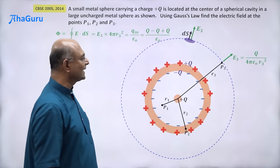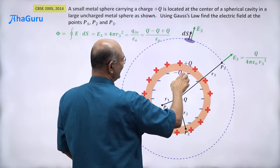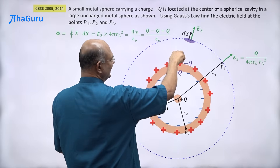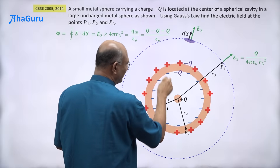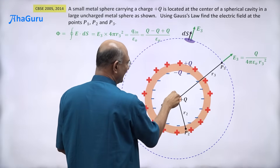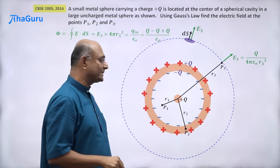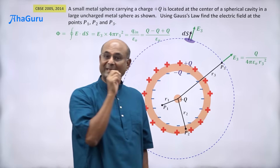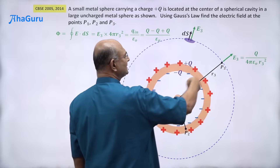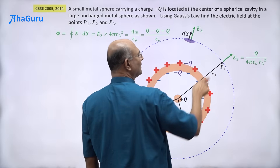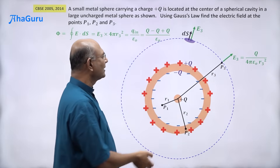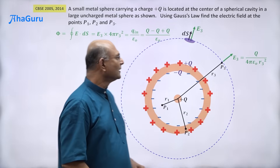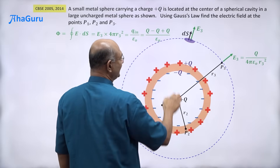You can also reason directly: each spherically distributed charge behaves like a point charge at the center. The plus q on the inner sphere, minus q on the inner surface, and plus q on the outer surface add up to a net point charge of plus q at the center. At distance r3, the field is therefore 1/(4πε₀) times q/r₃², which matches what we obtained — confirming our answer for P3.